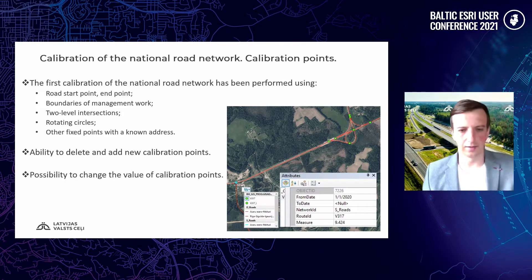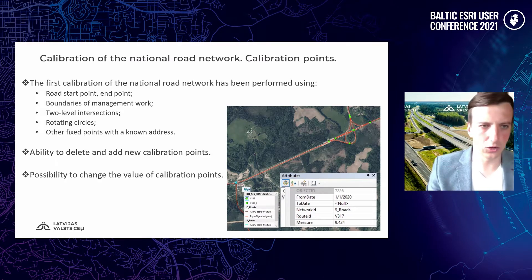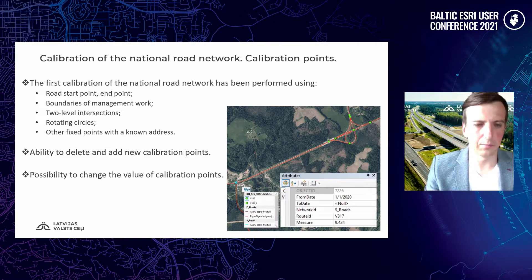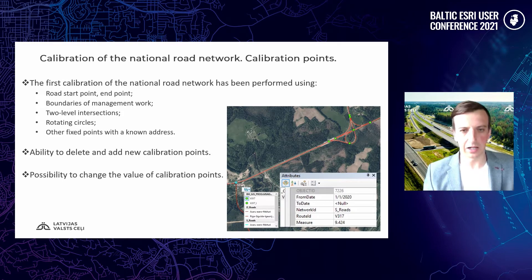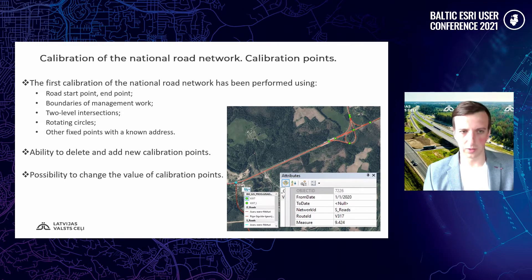What does calibration mean? For calibration, it means that we need to define road start and road end address. We use these points for calibration. There are also other specific points in the road network which we use — for example, two-level intersections, roundabouts, and other fixed points with known addresses. We are able to delete and add new calibration points and recalibrate the road network, and we can make changes in calibration point values as well if we get more accurate information about our road network.